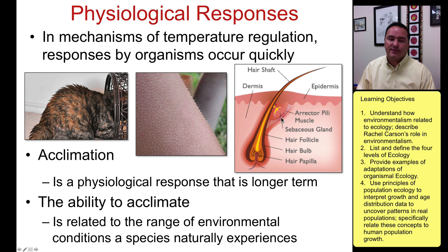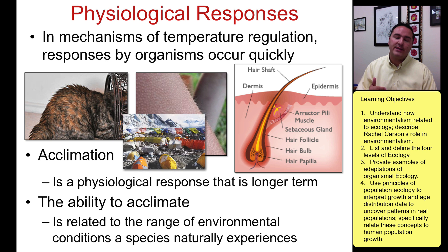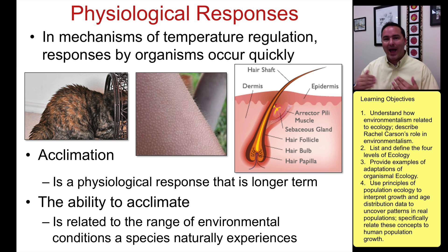You can also acclimate, which means you respond over a longer-term change. This happens to those who climb high mountains — they have to stay at base camp for a while. If you look at them before and after they've stayed at base camp, you'd actually see that their red blood cell count goes up, because they've acclimated to higher elevations with less oxygen.